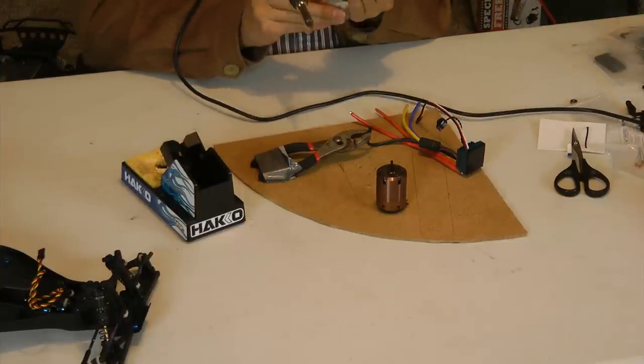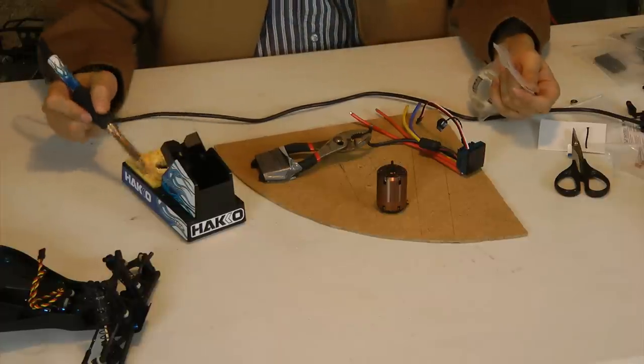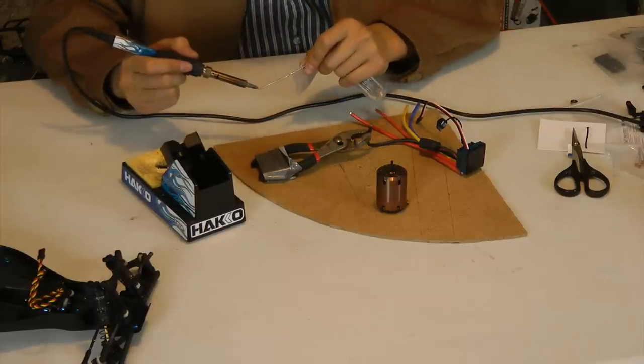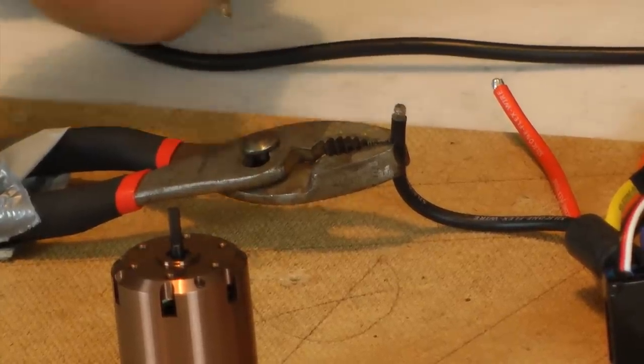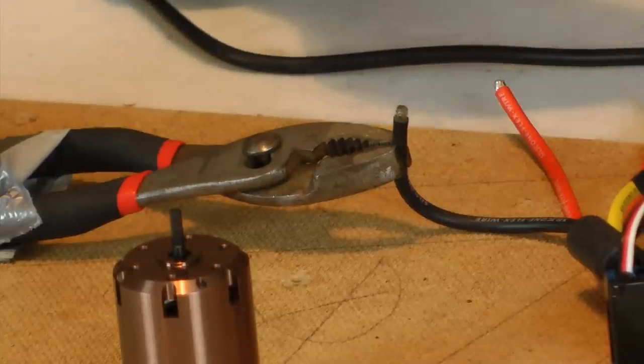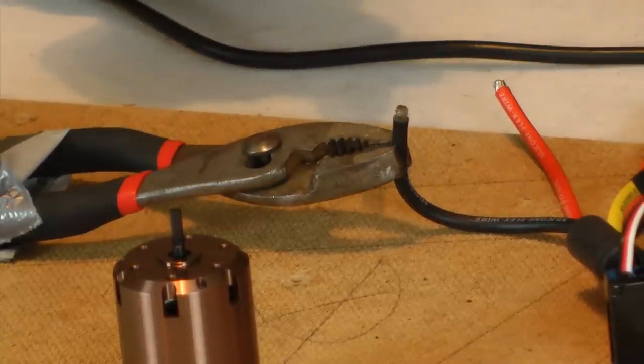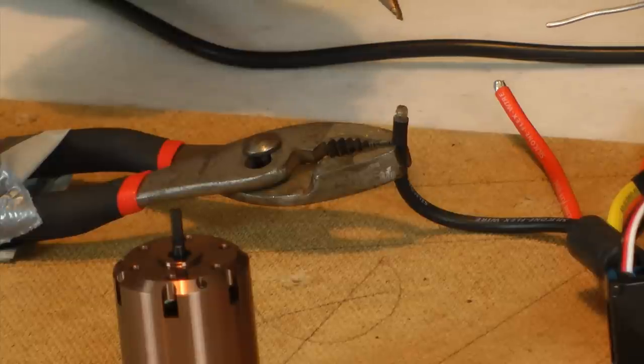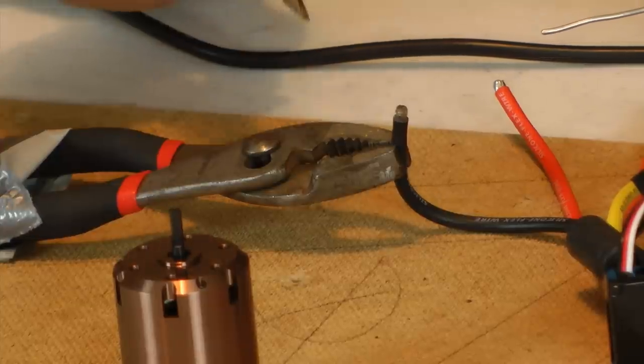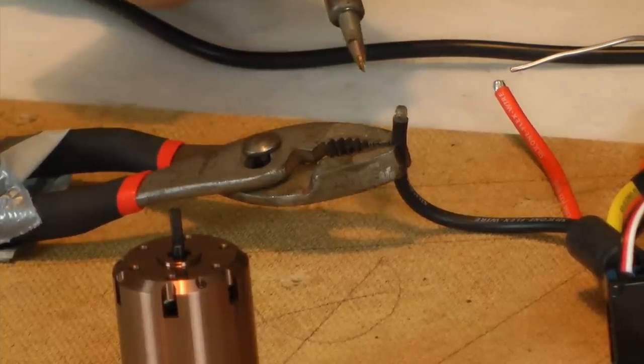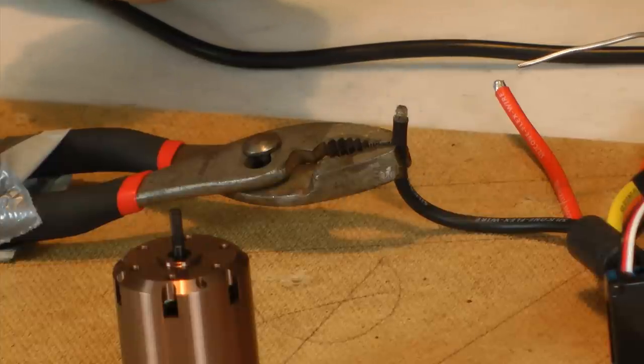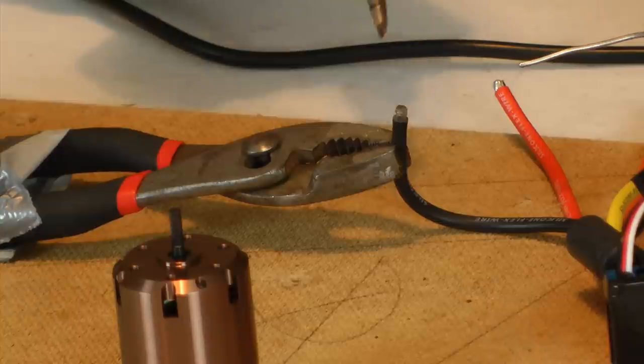So with the iron at temperature, just clean the tip, apply some solder. What I'm doing is tinning the cable. This just prepares it for the soldering process. I just like to tin it because it allows me to make sure that the individual surface has the solder applied correctly before mating the two pieces together.